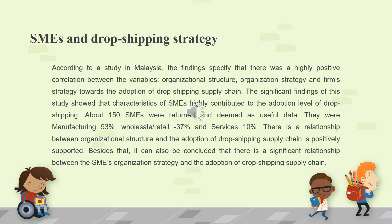According to a study in Malaysia, the findings specify that there was a highly positive correlation between the variables — organizational structure, organization strategy, and firm strategy — towards the adoption of drop shipping supply chain. The significant findings showed that characteristics of SMEs highly contributed to the adoption level of drop shipping. About 150 SMEs were surveyed, comprising manufacturing 53%, wholesale/retail 37%, and services 10%. The study confirmed a significant relationship between organizational structure and the adoption of drop shipping, as well as between SME organization strategy and the adoption of drop shipping supply chain.